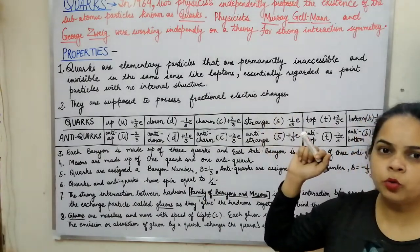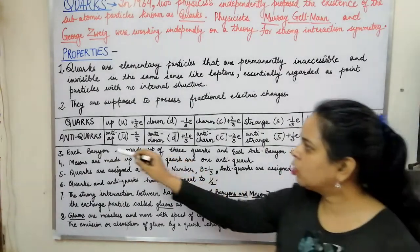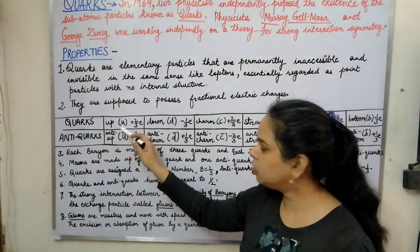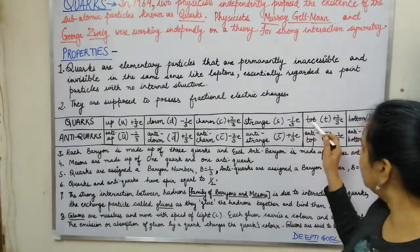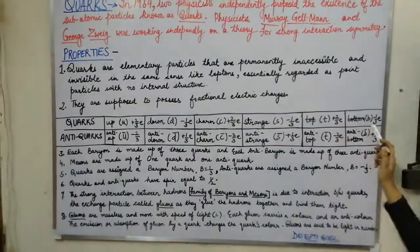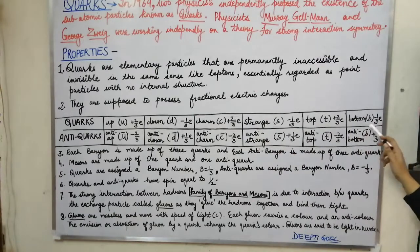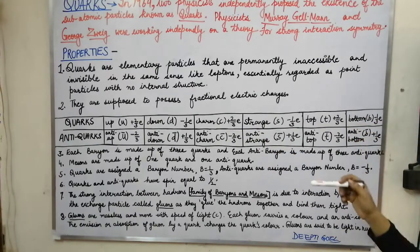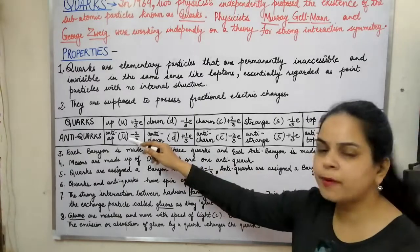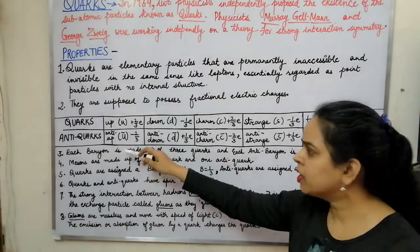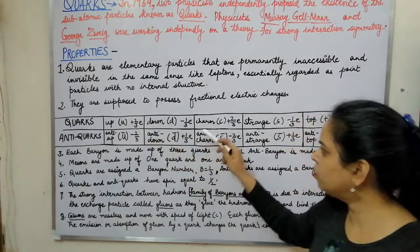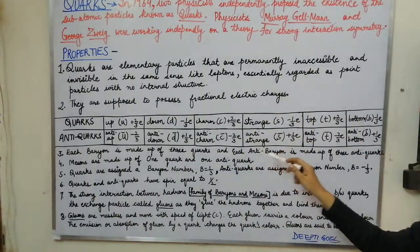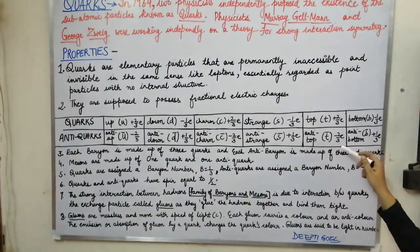The quarks were found to be of six types: up, down, charm, strange, top, and bottom. These six quarks also have their anti-quarks, named by replacing their name with 'anti': anti-up, anti-down, anti-charm, anti-strange, anti-top, and anti-bottom.